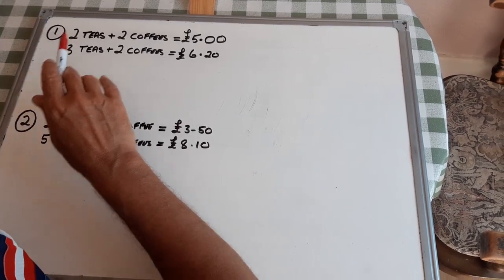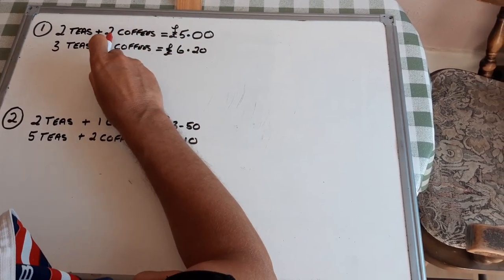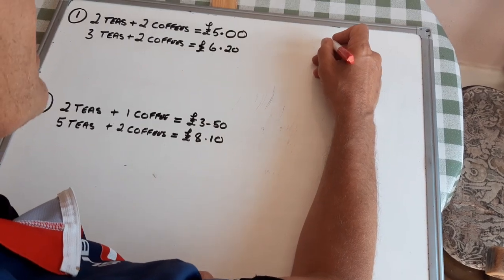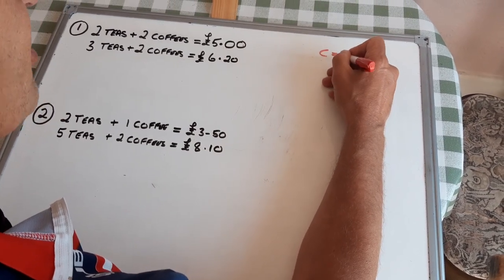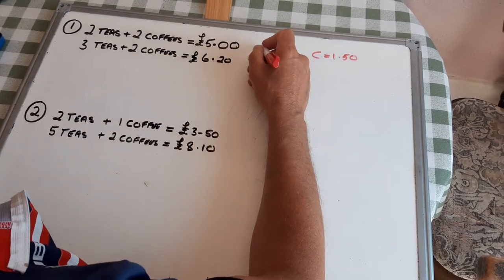I wonder, could a coffee be £1.50? Well, if a coffee is £1.50, two coffees would be £3. So, that would mean a tea would be £1.